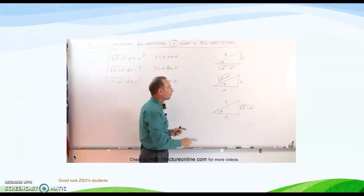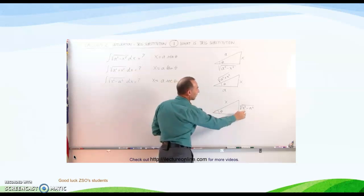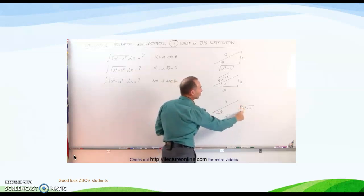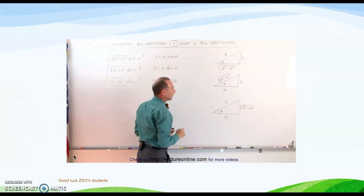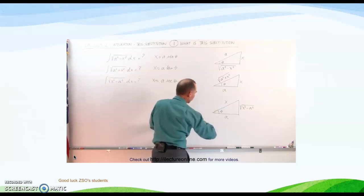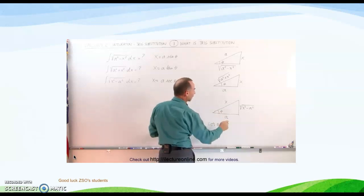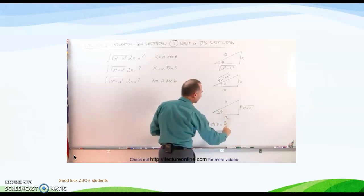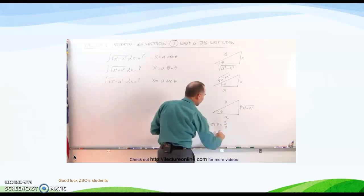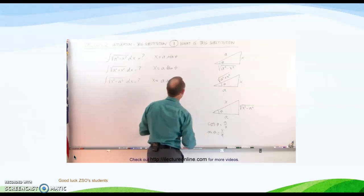Finally, on the third triangle, if we let x be the hypotenuse and a be the adjacent side, then the opposite side becomes the square root of x squared minus a squared. The cosine of theta equals a divided by x by definition. The secant of theta is the inverse of cosine, which is x divided by a. Therefore, x can be written as a times the secant of theta.